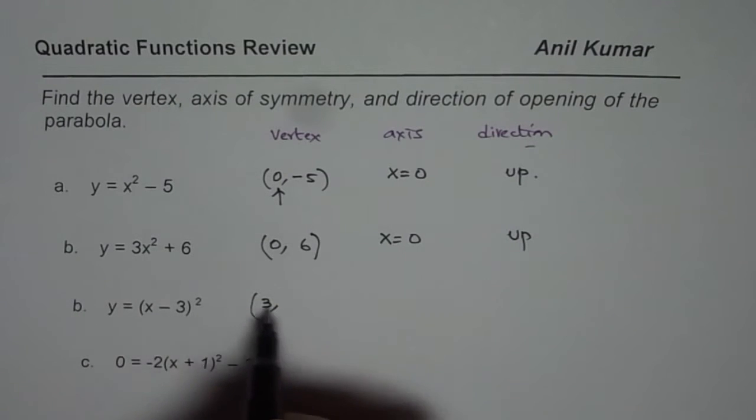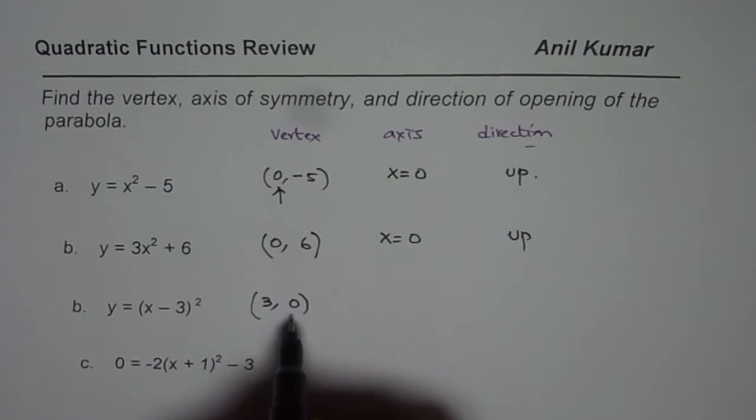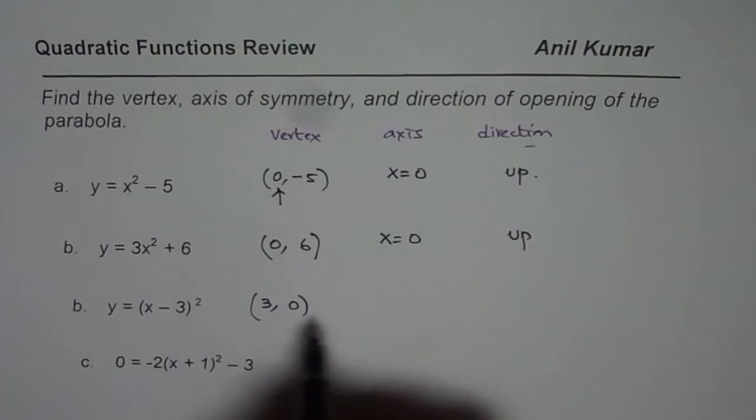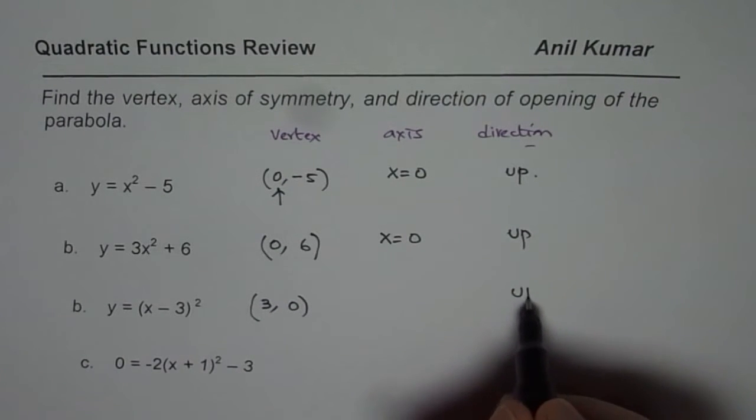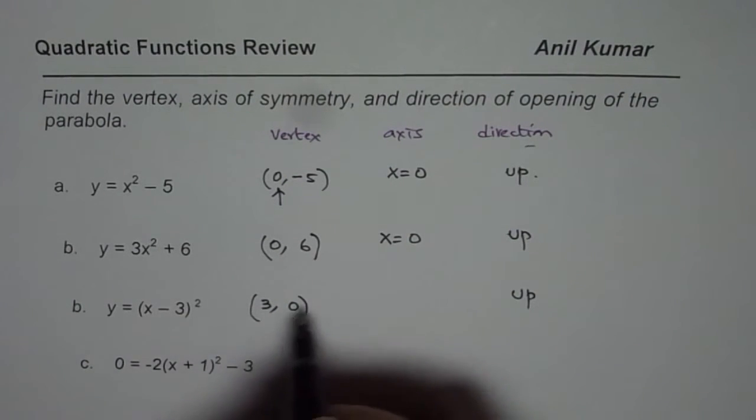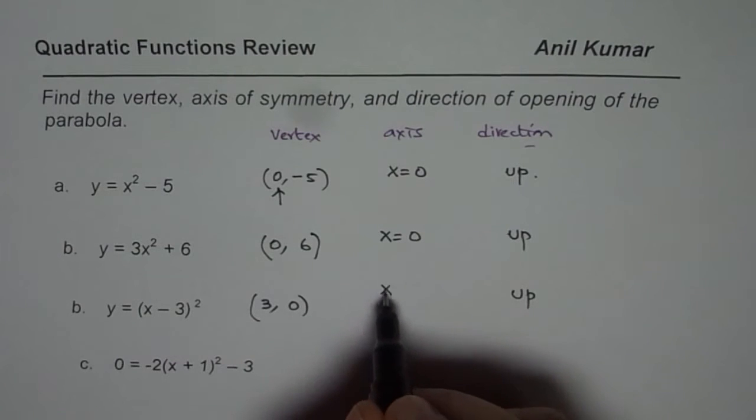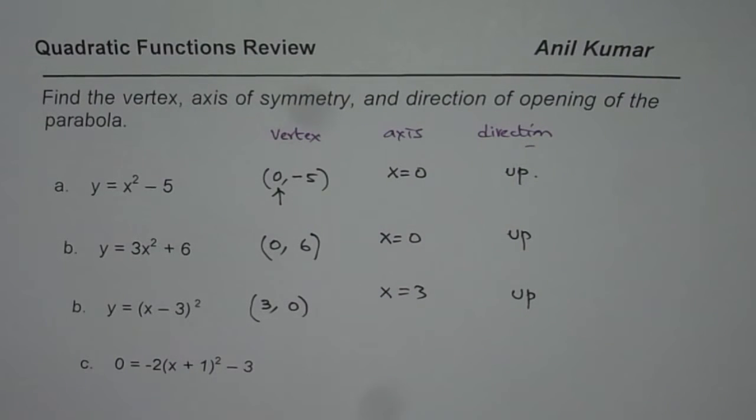In this case, x equals 3 makes it 0. The y-value will be 0 here, and it also opens upwards. The axis of symmetry is x equals 3, which is the x-value of the vertex.